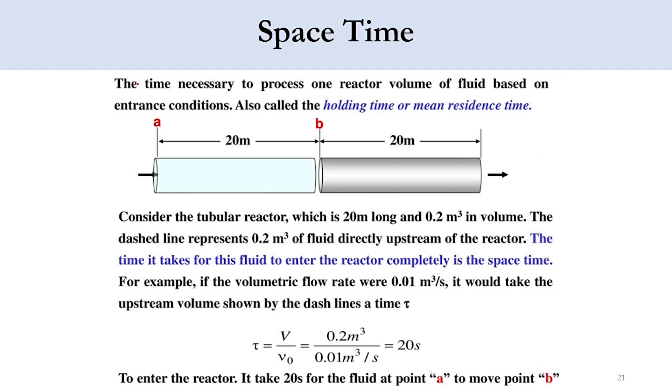Now you can see, for example, we will designate the starting point as A and ending point as B, and the total length of this PFR is 20 meters. So the time it takes for the fluid to enter, for example it has entered at 0 minute and left here at 2 minutes. The total time which this fluid has spent into this reactor will be the residence time or space time. The time it takes for this fluid to enter the reactor completely is the space time. For example, if the volumetric flow rate was 0.01 cubic meter per second and the volume was 0.2 cubic meter, the total residence time will be 20 seconds, or we can say it takes 20 seconds for the fluid to move from point A to point B. This is the overall concept of space time, or we can simply specify it as the ratio of volume of the reactor to the volumetric flow rate of the fluid.